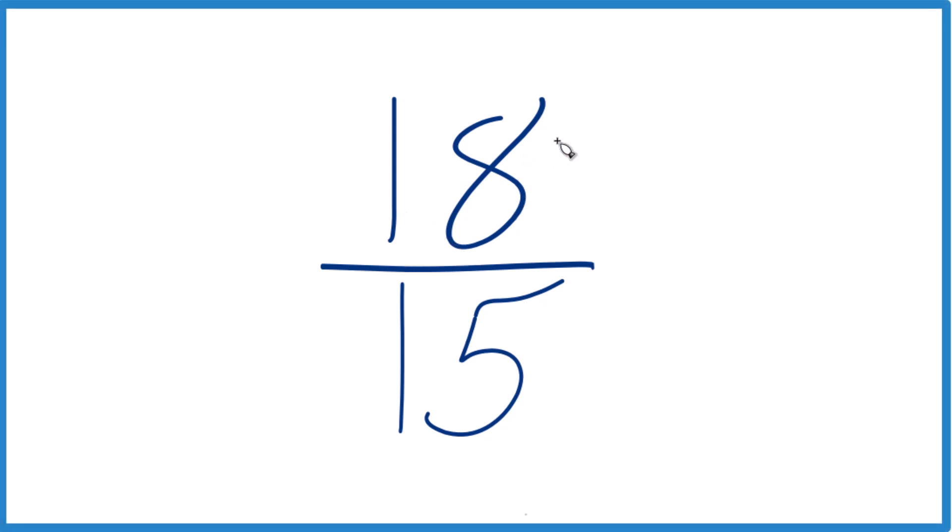So let's simplify the fraction 18 fifteenths, and we'll also write this as a mixed number. When you look at 18 fifteenths, we want to find a number that goes into both 18 and 15. We're looking for a common factor.